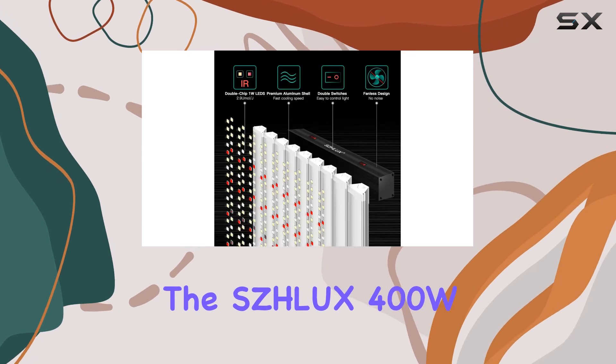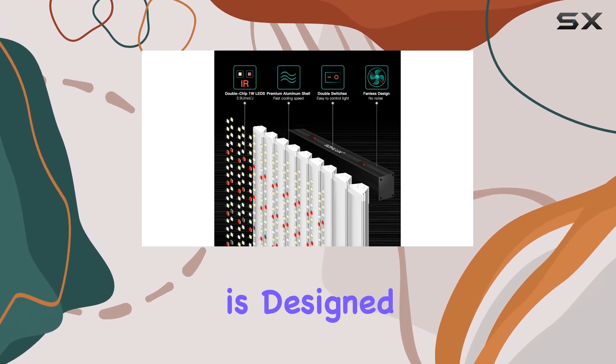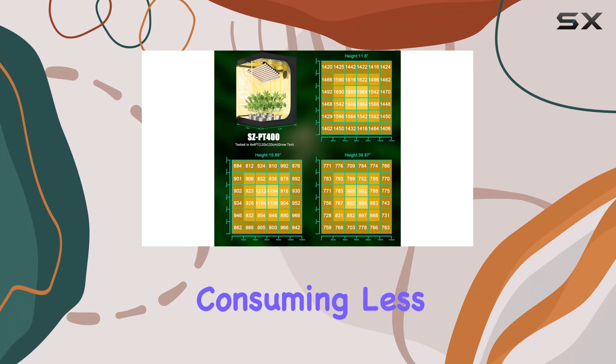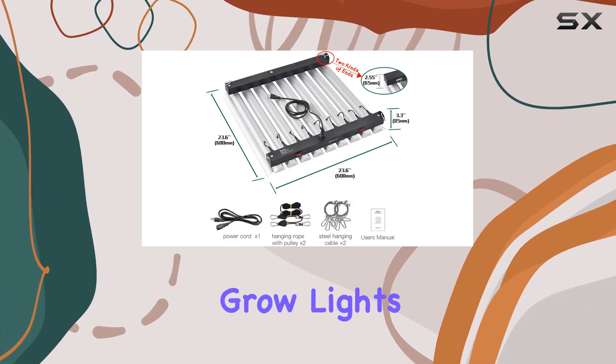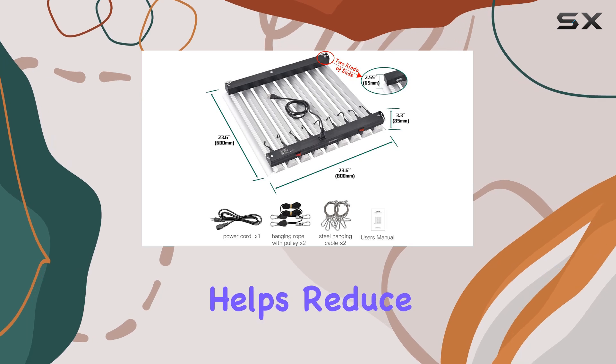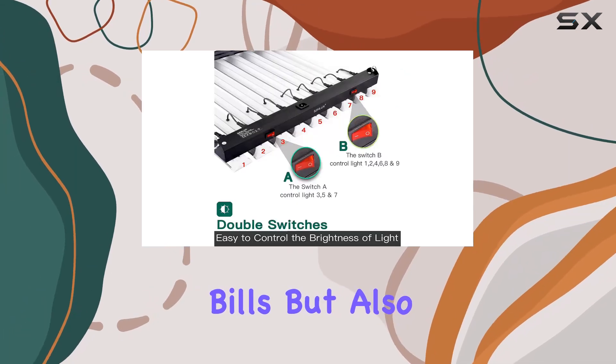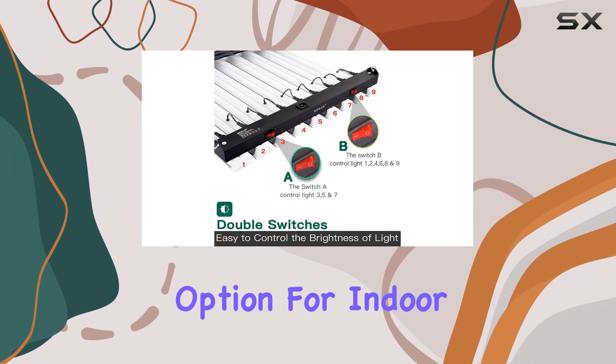Additionally, the Schlux 400W LED Grow Light is designed for energy efficiency, consuming less power while providing the same level of light as traditional grow lights. This not only helps reduce your electricity bills, but also makes it an eco-friendly option for indoor gardening.